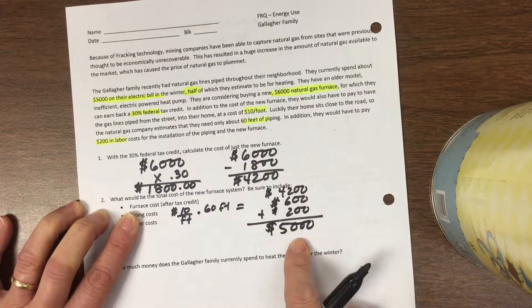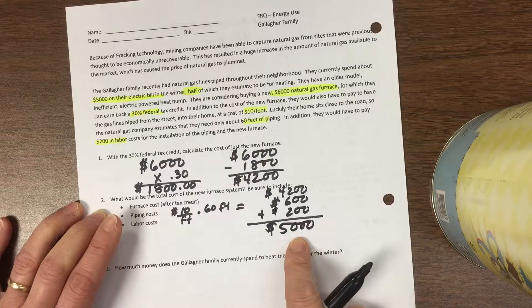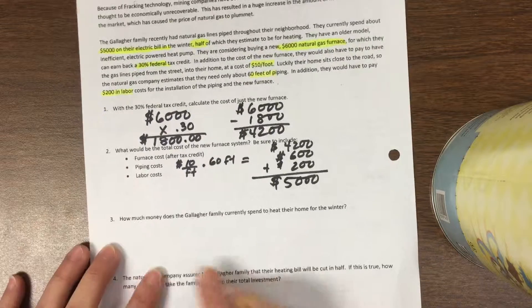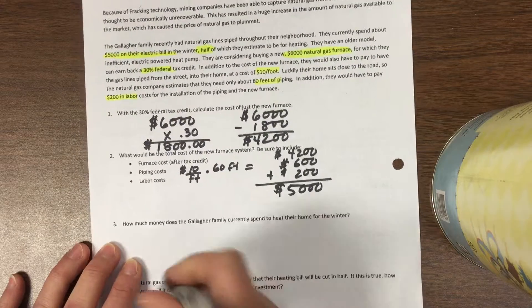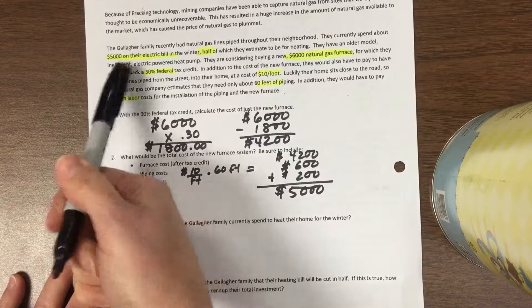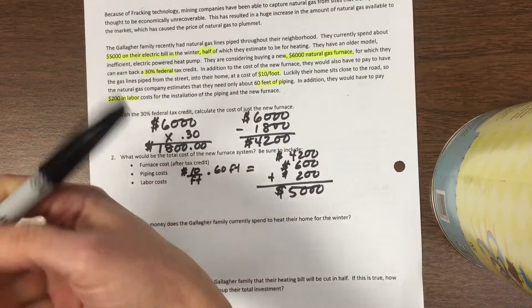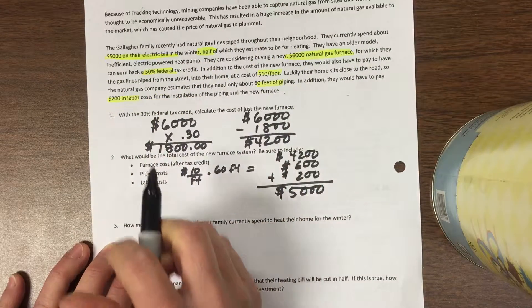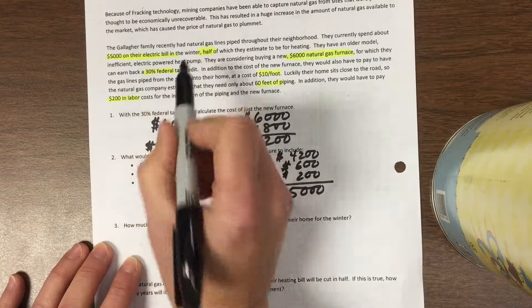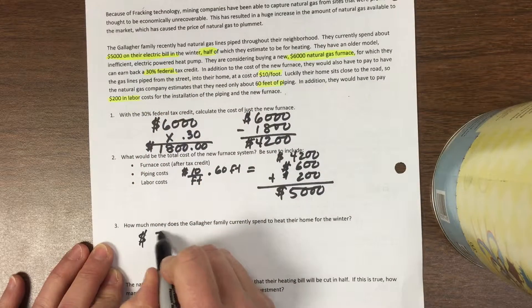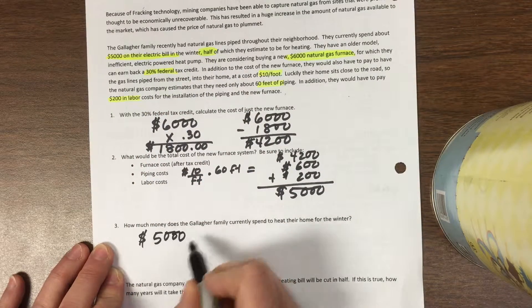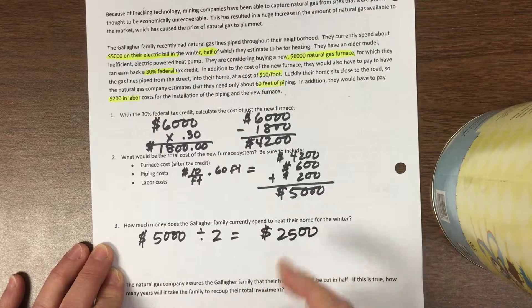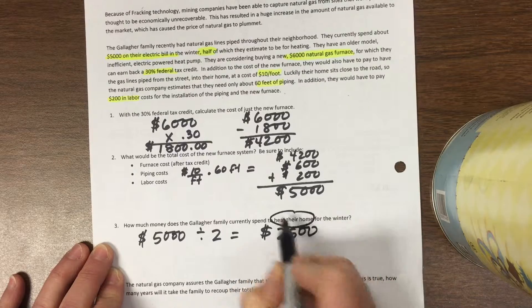The question is, is it worth it? When would they get their money back? They spend $5,000 now, but remember only half of it's for heating. The other half is for their lights, refrigerator, dryer, or whatever else they use electricity for. So $5,000 divided by 2—they spend $2,500 now to heat their home.